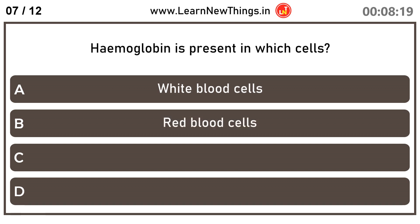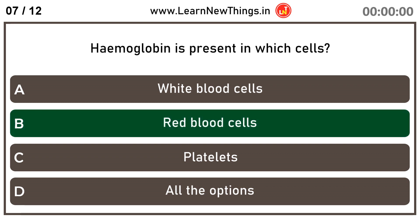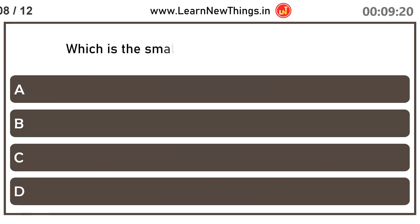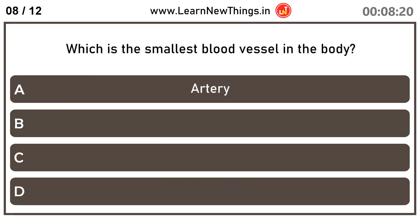Hemoglobin is present in which cells? Red blood cells. Which is the smallest blood vessel in the body? Capillary.